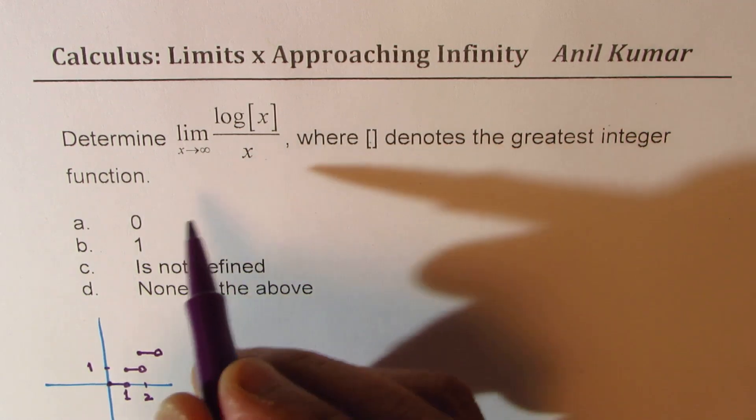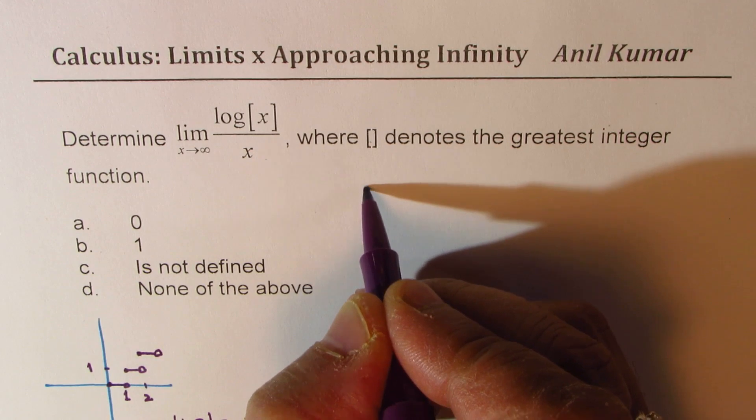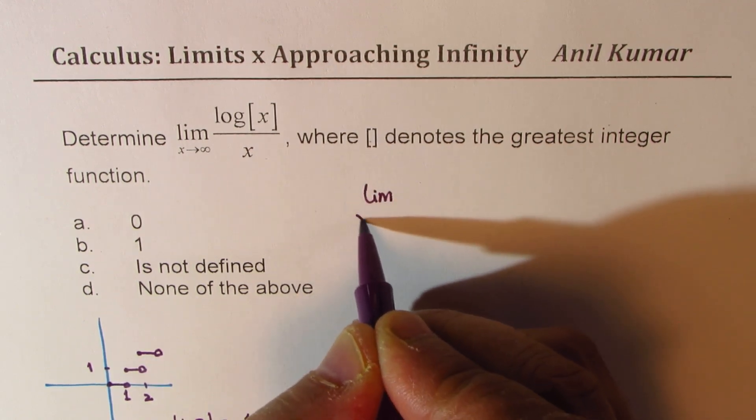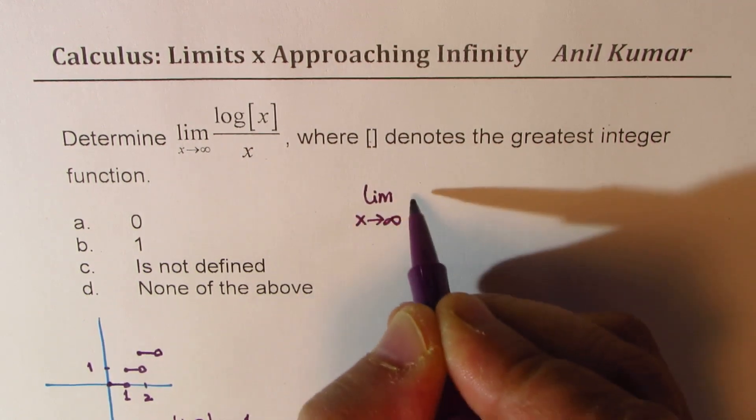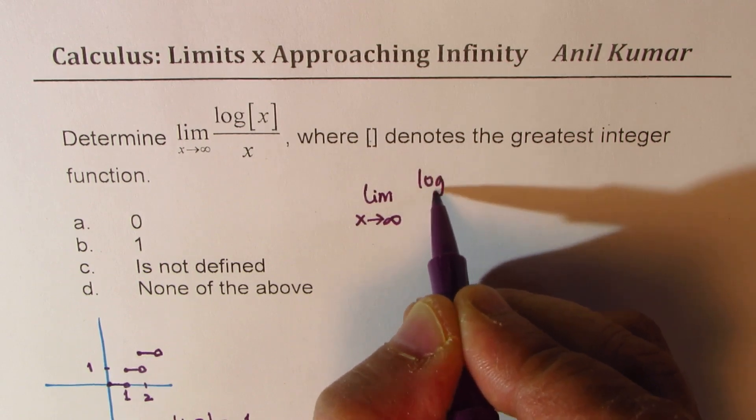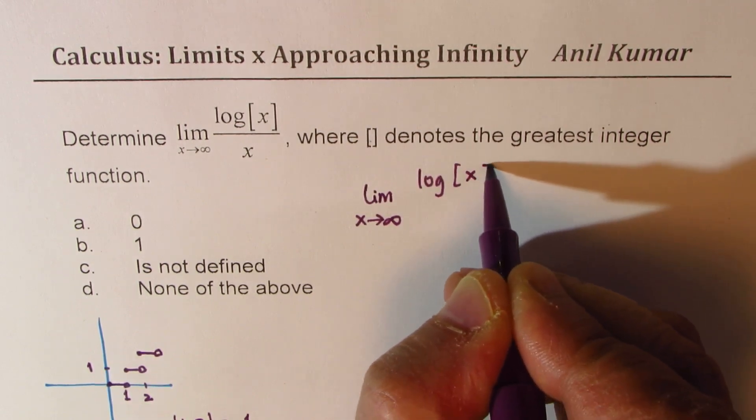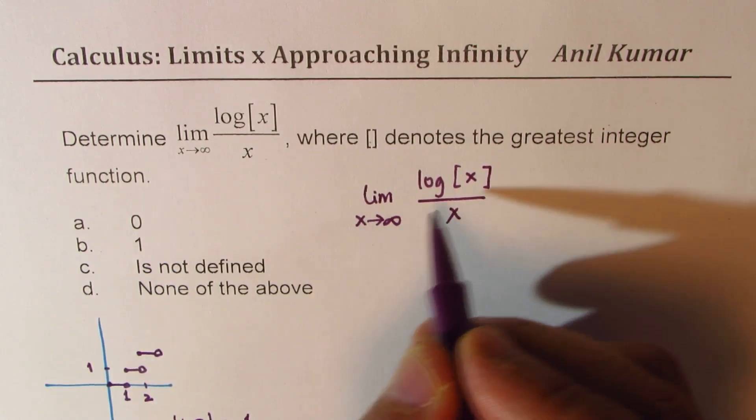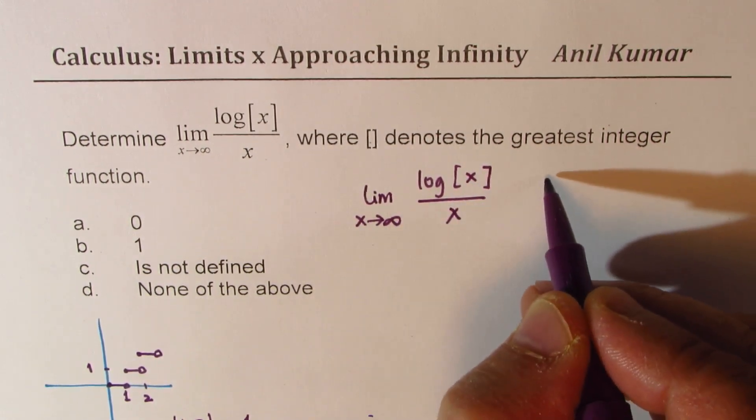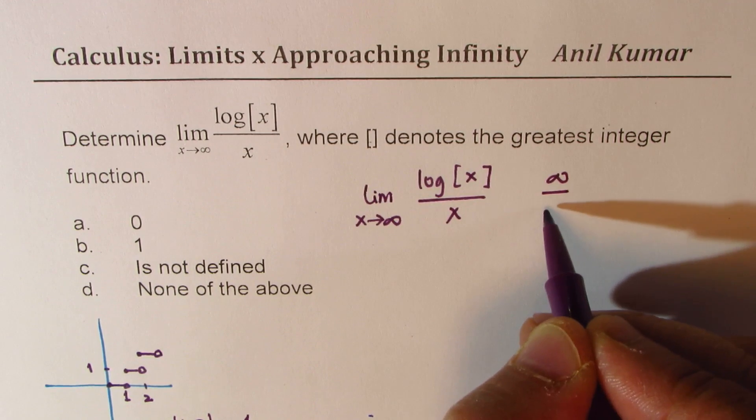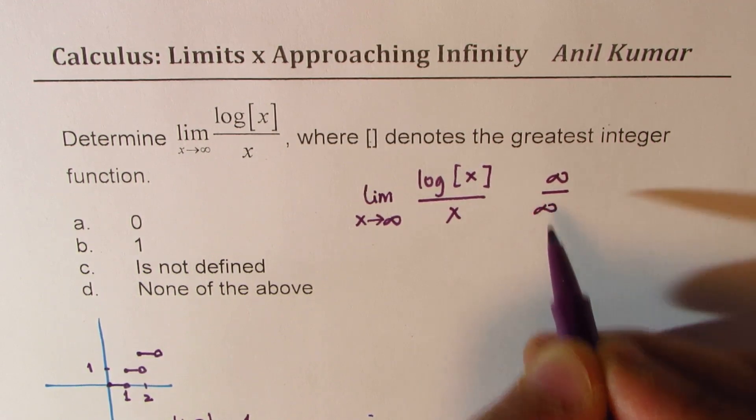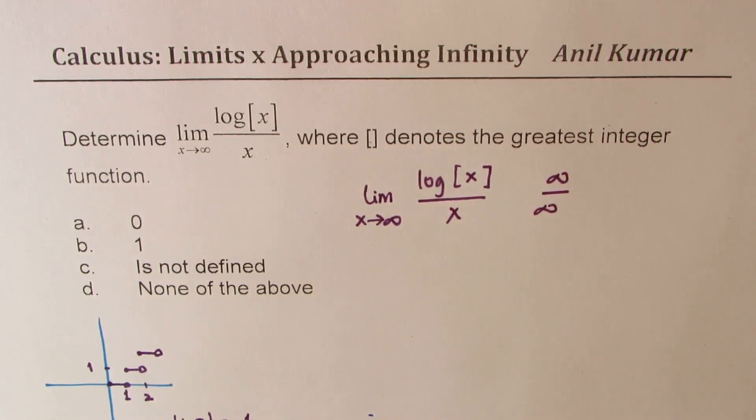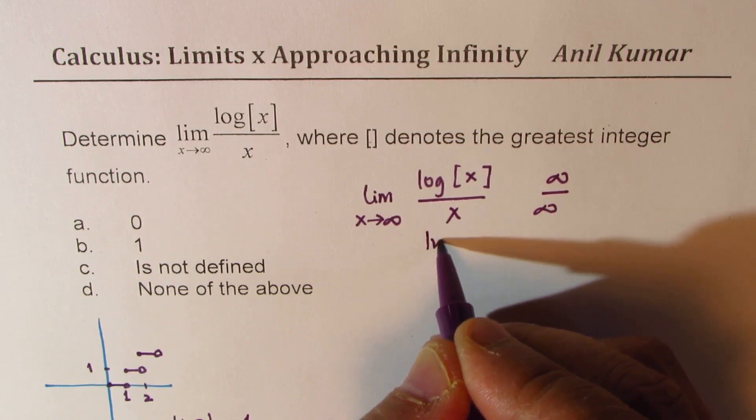Now clearly, what we notice here is that the limit as x approaches infinity for log of greatest integer function over x. If I substitute limit infinity here, then we get infinitely large value over infinitely large value. Now this is an indeterminate.